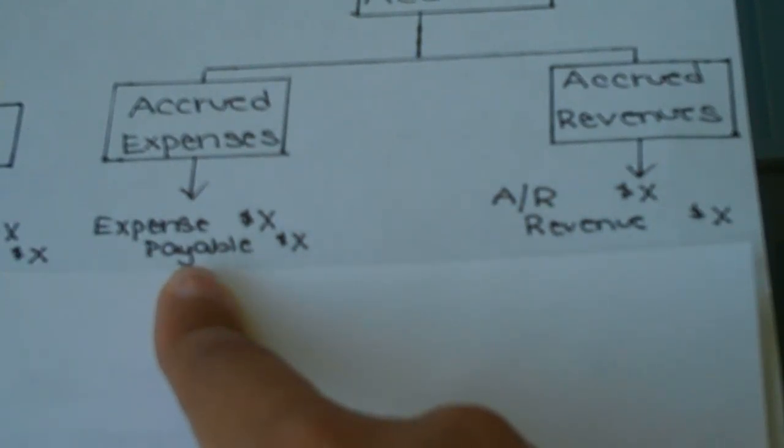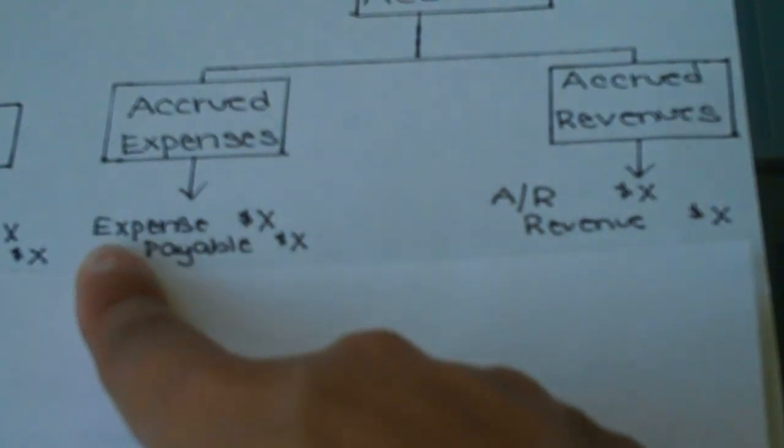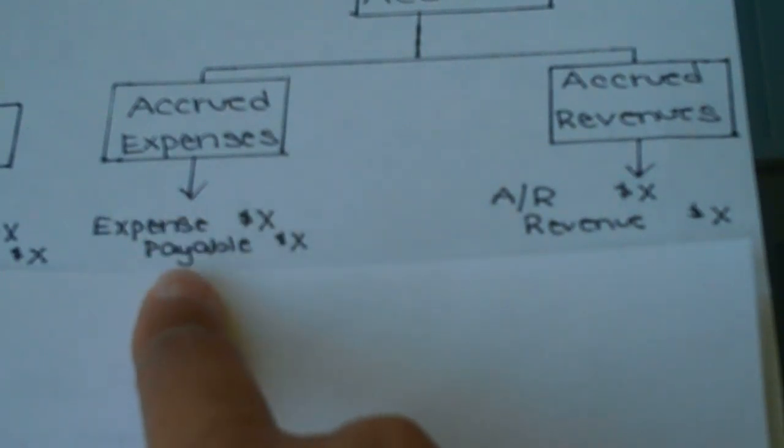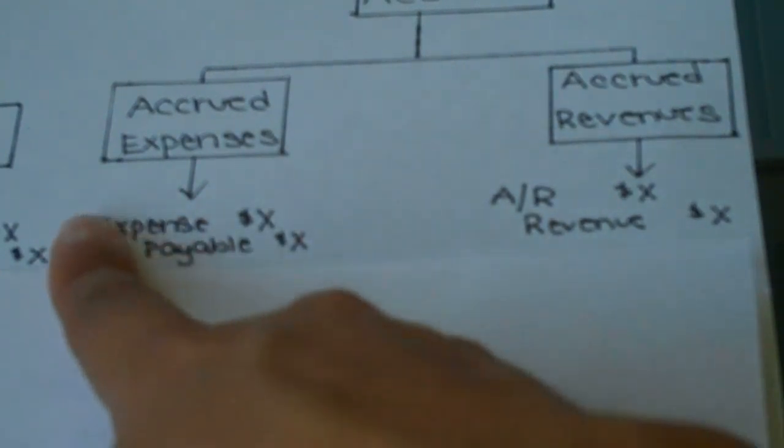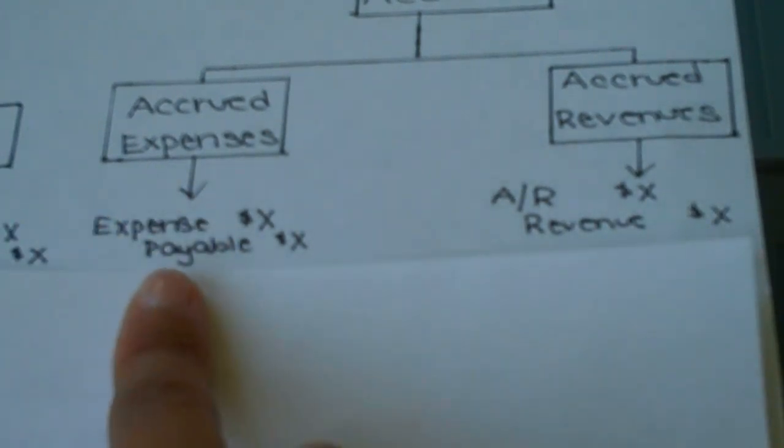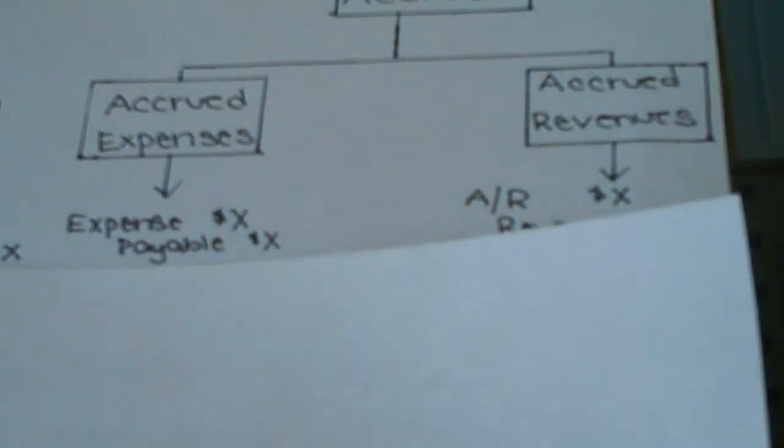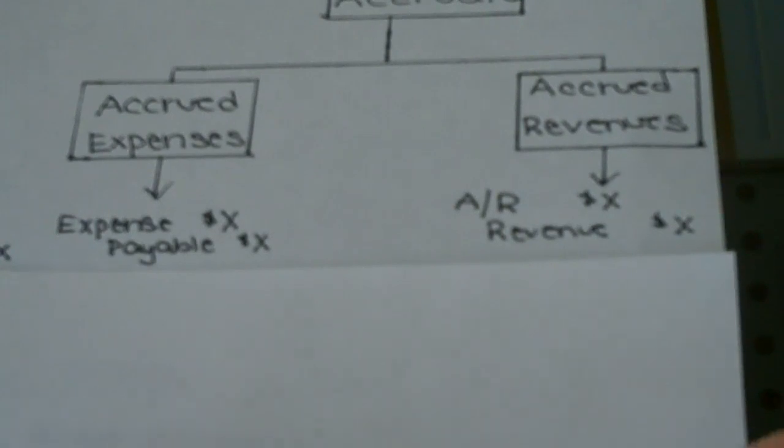An example might be if we owe some of our workers for their time. At the end of the accounting period, maybe it doesn't fall on a pay period, so it's not yet recorded. We'd need to record it by debiting wages expense and increasing the offsetting liability account, wages payable. I just left it generic here as expense and payable, so you can fill it in for whatever particular item you have to accrue for.